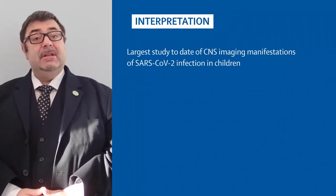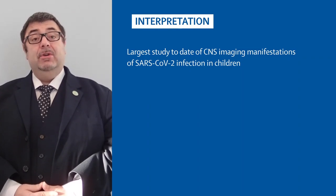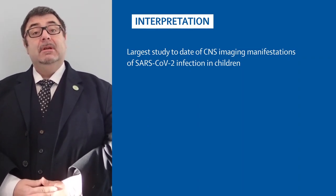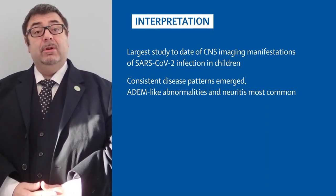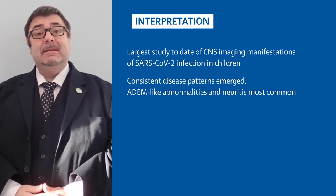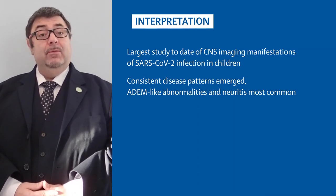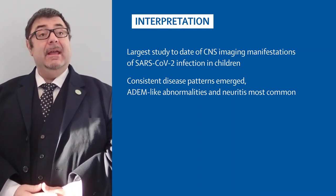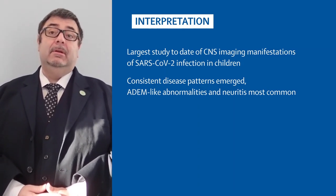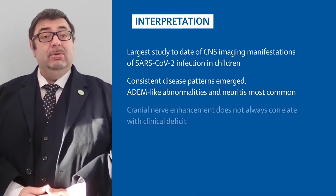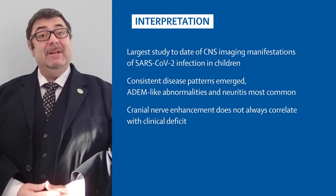This is the largest study to date of CNS imaging manifestations of SARS-CoV-2 infection in children. Mild to severe COVID-19 occurred in healthy children without pre-existing morbidities. Consistent disease patterns emerged, of which ADEM-like abnormalities of the brain and spinal cord and neuritis were the most common. Cranial nerve enhancement may occur without any correlative cranial nerve deficits.